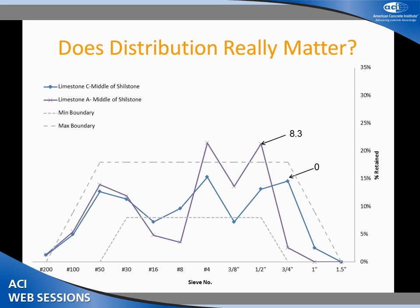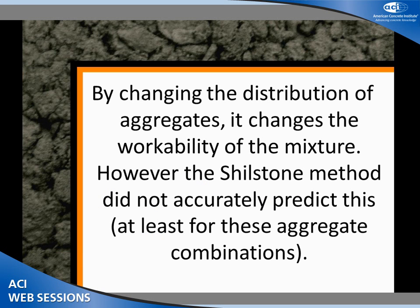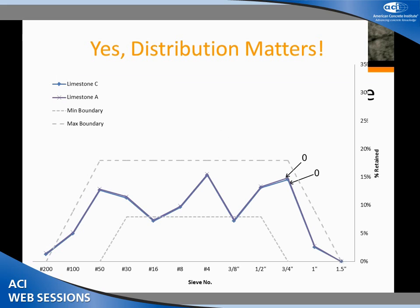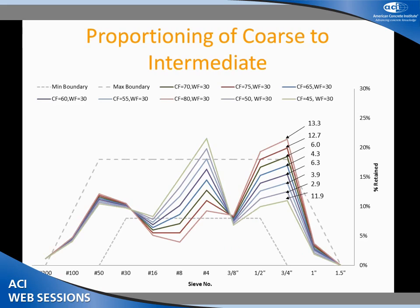Does distribution really matter? I have two aggregate mixtures that are in the very middle of the Shilstone box — both of them — yet they have very different performance. I'm going to sieve the purple one so it matches the blue, and they're the same: zero. By changing the distribution of these aggregates, it changes the workability of the mixture. The Shilstone method is just not accurate for these purposes — both of these are in the middle, and the Shilstone just didn't do it for us.